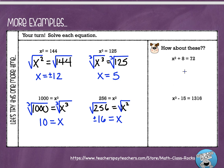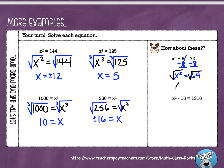These last two problems on the side have an extra step — we need to remember what we learned about solving two-step equations. Before finding the square root, I need to get rid of the 8. Since it's a plus 8, I subtract 8 on each side, leaving me with x squared equals 64. Then I find the square root on each side: x equals 8. But since this has x squared, there are two solutions — 8 times 8 is 64, and so is negative 8 times negative 8. So make sure you put that plus-minus in front of your 8.